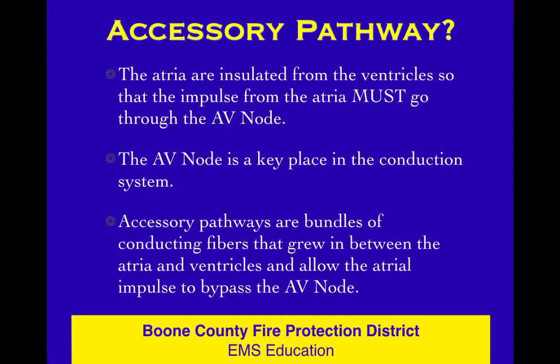We've hit this several times in previous lessons, but I wanted to focus for just a few minutes on this topic alone — it deserves its own lesson. The atria and the ventricles are supposed to be insulated electrically. The fibrous tissue that supports the valves between the atria and the ventricles is supposed to be a full insulation so that impulses cannot jump from the atria directly to the ventricles. They have to go through the AV node. The AV node is a key part of the conduction system — it's there to slow that impulse, allow the atrial kick to stretch the ventricles, and it's there as a protection for the ventricles when the atria are fibrillating. The atrial chaos doesn't become ventricular chaos.